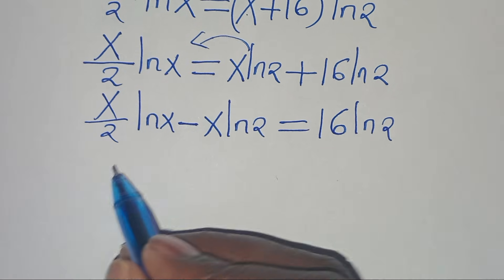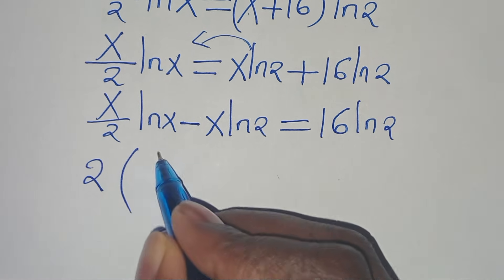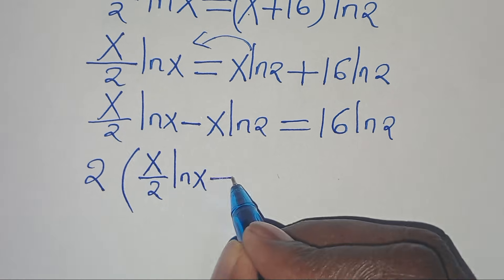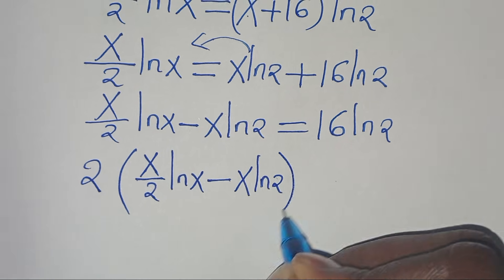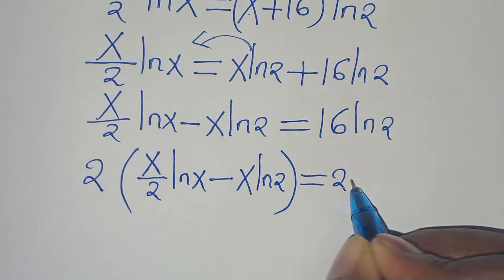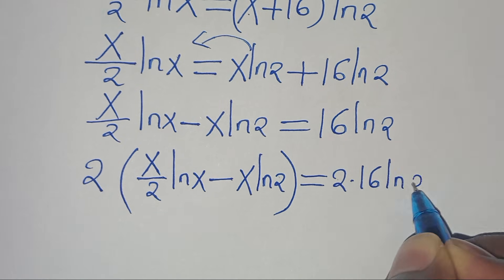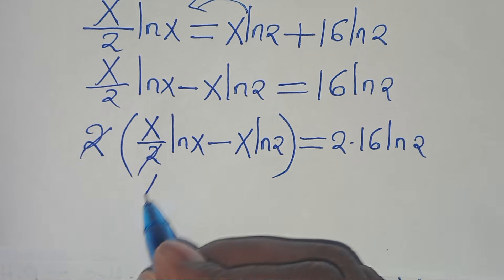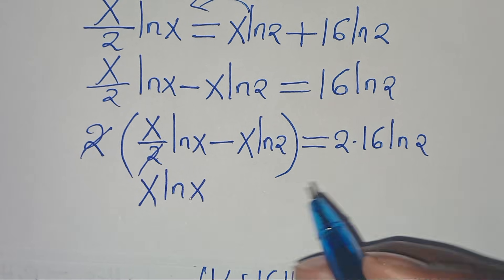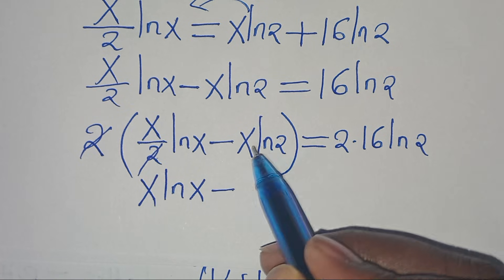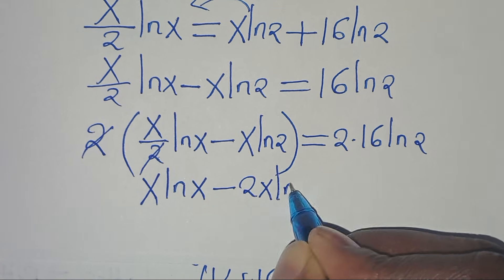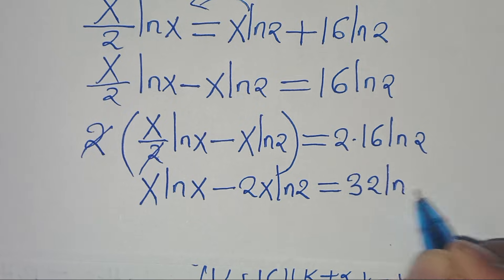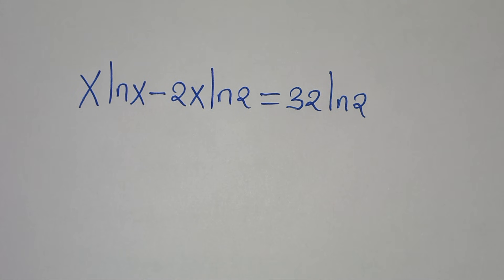Let's multiply both sides by 2, so that we have 2 into the parenthesis of x over 2 times ln of x minus x ln of 2, this is equal to 2 multiplied by 16 ln of 2. The 2 and 2 simplify, so here we have x ln of x minus 2 times x ln of 2, which becomes 2x ln of 2, this is equal to 32 ln of 2.